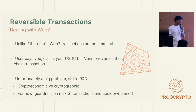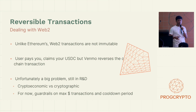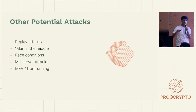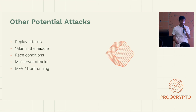Reversible transactions are unfortunately a big problem and still in R&D. We think the solution would be a crypto-economic solution rather than a cryptographic one. You can put guardrails in place for max dollar amounts and cool-down periods to disincentivize malicious behavior. There are other potential attacks as well, such as replay attacks, man-in-the-middle attacks especially when doing server-side proving, race conditions, mail server attacks, MEV, and front-running — I discussed those in my previous ZK10 talk, and the ZK email team have talked about those as well.